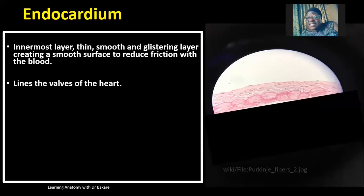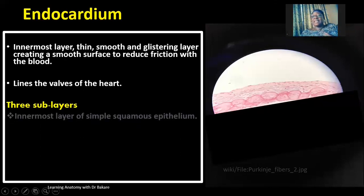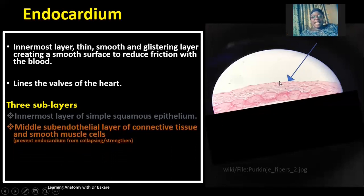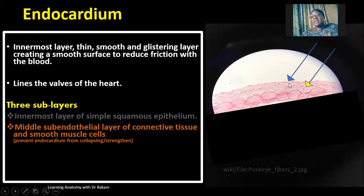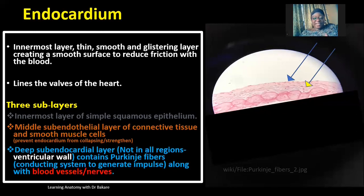The endocardium is further subdivided into three sub-layers. The first and innermost layer is lined with simple squamous epithelium. External to this is the sub-endothelial layer, which contains connective tissue and smooth muscle. This smooth muscle within the sub-endothelial layer helps to prevent collapse of the endocardium, thereby providing structural strength.